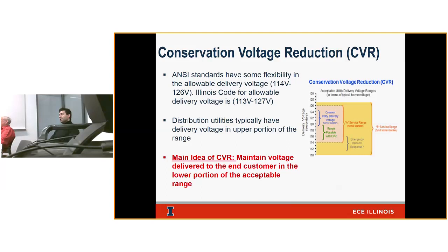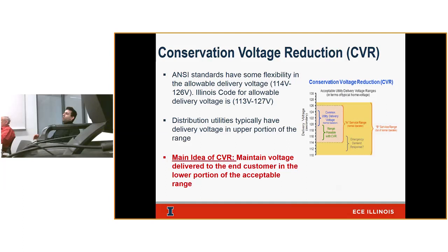Distribution utilities historically used to operate in the upper range of that voltage, mainly around 125 to 126. If you go to any of our substations and look at the voltage regulator or the LTC, they're most likely set at 125 as a setpoint with a bandwidth of plus or minus 1, so ranging from 124 to 126. The reason we do that relates to voltage drop calculations: on a distribution circuit, as you go farther from the substation, voltage tends to drop because of impedance. We want to make sure customers are nowhere near the lower end of the allowable range.